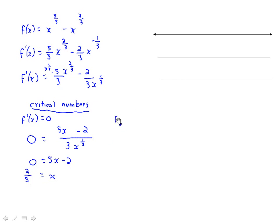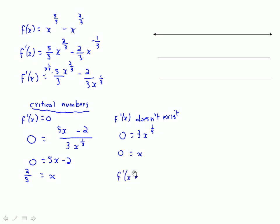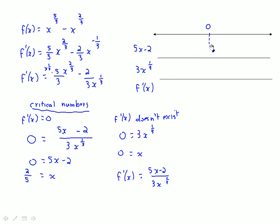The other type of critical number is where f'(x) doesn't exist — that's where the denominator equals zero. So 3x^(1/3) = 0, giving x = 0. Our two critical numbers are x = 0 and x = 2/5.